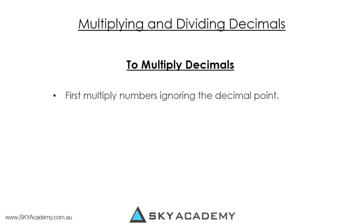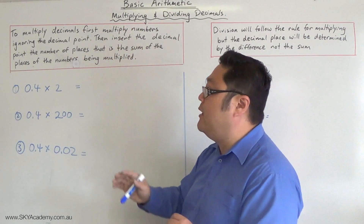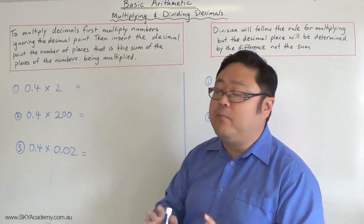Let's look at multiplication first. To multiply decimals: first multiply the numbers ignoring the decimal point, then insert the decimal point the number of places that is the sum of the decimal places being multiplied. Let me explain what that means.